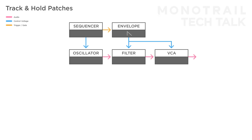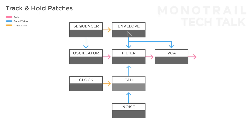If you haven't seen the original sample and hold video, make sure to check it out, as you can try many of the patches from that video with the track and hold module as well. For example, take a simple voice and feed noise and a steady clock to a track and hold module instead of a sample and hold module influencing the filter. Instead of a steady stepped random voltage, you'll get a signal that alternates between a steady random voltage and the noise influencing the filter directly, creating interesting textures.